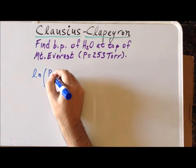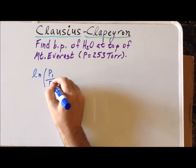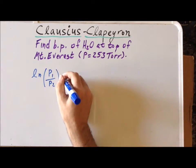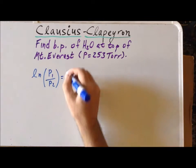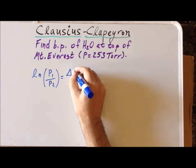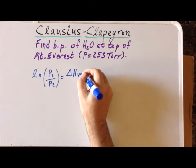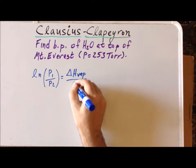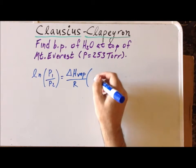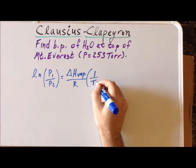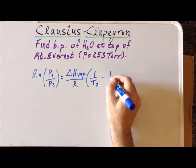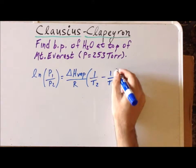Recall that the equation tells us that the log of the ratio of the pressures, ln(P₁/P₂), is going to be equal to the enthalpy of vaporization divided by R times the inverse of temperature 2 minus the inverse of temperature 1: ΔHvap/R(1/T₂ - 1/T₁).